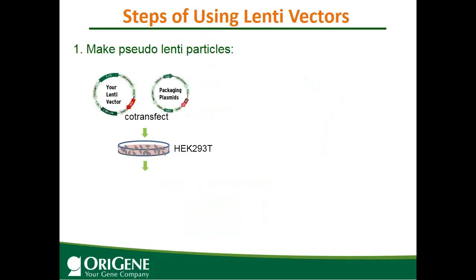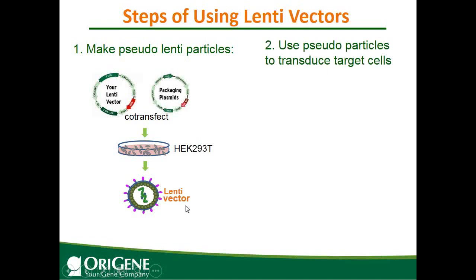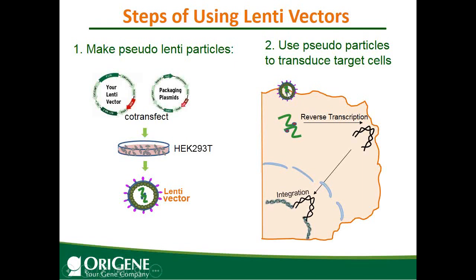This is a summary slide about the steps for using lentiviral vectors. First, you make pseudoviral particles by co-transfecting your lentiviral vector with the packaging plasmid mix into HEK293 cells. Two days later, you will have the pseudoviral particles containing only your lentiviral vector. Then you use these pseudoviral particles to transduce your cells. These pseudoviral particles can still perform one round of infection of your target cells.